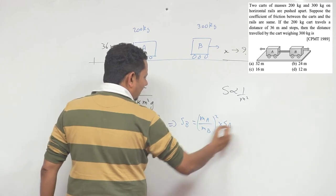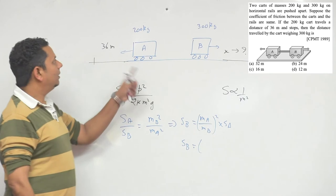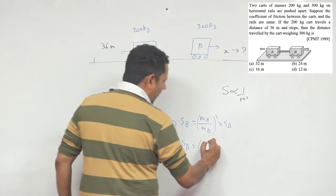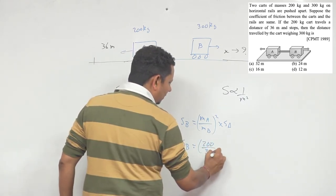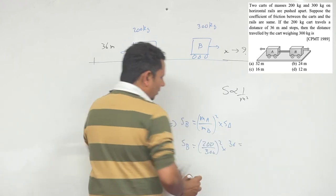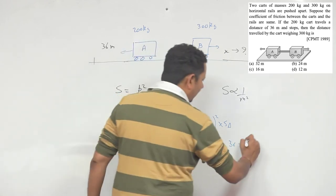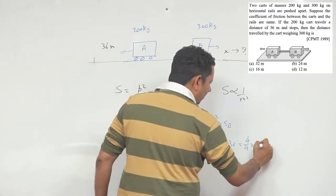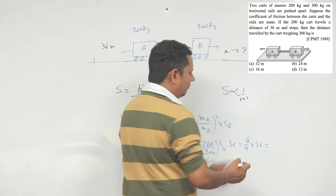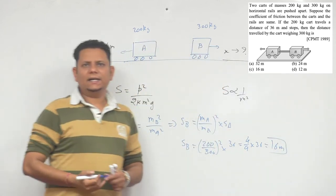So s_b value - 200 divided by 300. So 200 divided by 300 ka square multiplied by 36. This will become 2 by 3, 2 by 3 ka square that is 4 by 9, multiplied by 36. Dividing this becomes 4, that is 16 meter.